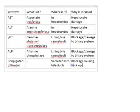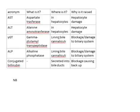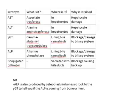Two key points about liver function tests that can be confusing. First, alkaline phosphatase is also produced by osteoblasts in bone and is used as an indication of high bone turnover. So you need to look at the gamma-GT level to tell whether the ALP is coming from bone or from the liver. If ALP is raised on its own, that suggests it's coming from bone, whereas if both ALP and gamma-GT are raised, that suggests it's coming from the bile canaliculi in the liver.